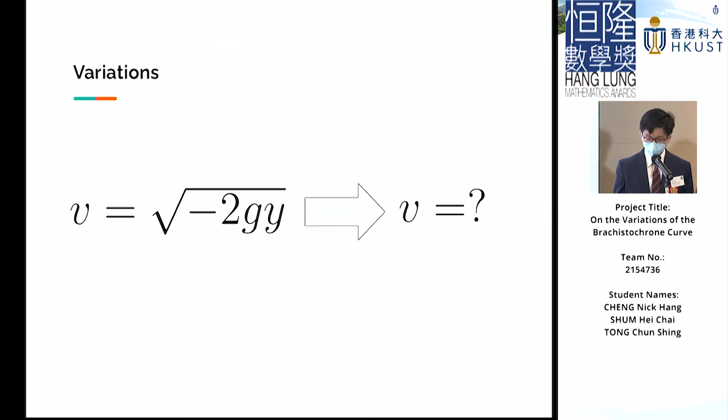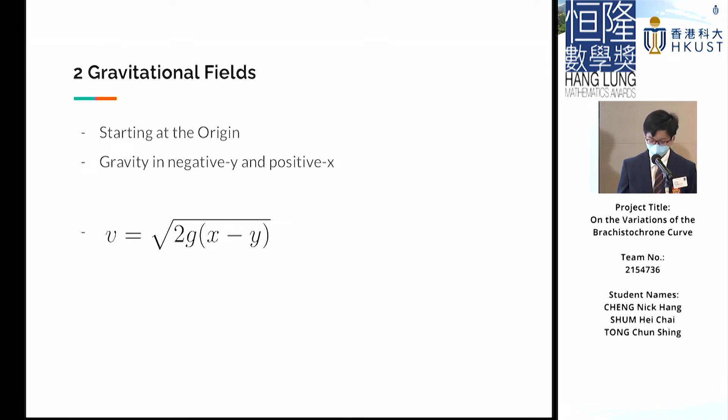After the classical Brachistochrone problem, we have come up with some variations. The main source of variation would be to change the velocity as a function of the position, where initially it was √(-2gy). In our first variation, we wanted to involve x in the velocity, so we start from the origin and let v = √(-2g(x-y)), which is essentially acceleration in positive x and negative y direction.